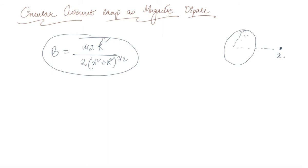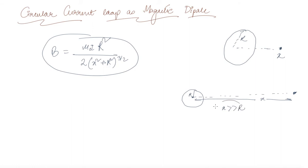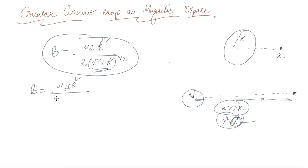Consider a ring-shaped current-carrying loop with radius R. If the distance X on the axis is very much greater than R, then in the denominator the term R² can be ignored compared to X². So X² + R² simplifies to X², and the expression becomes B = μ₀IR² / (2X³).